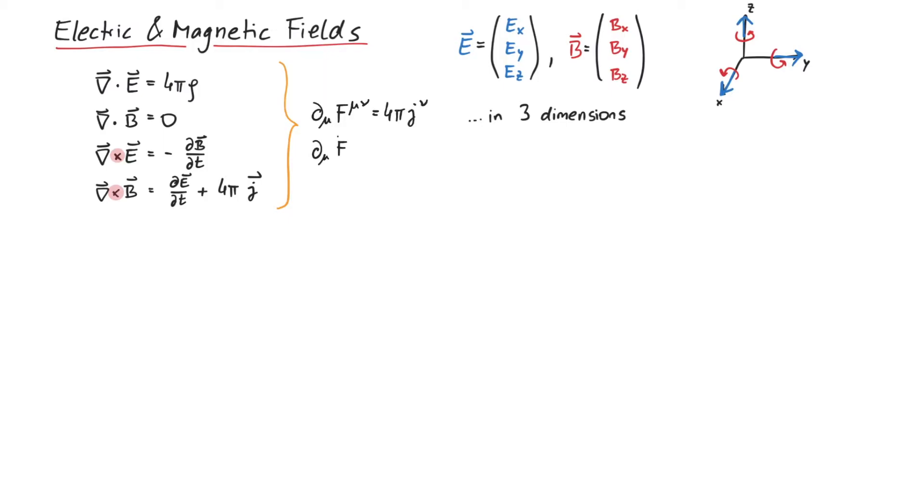These two tensorial equations make use of the electromagnetic field strength tensor, F mu nu. With lower indices and in units where the speed of light is one, the components of this tensor are the components of the electric and magnetic fields. As you can see, for three plus one dimensions, we have three E fields and three B fields.